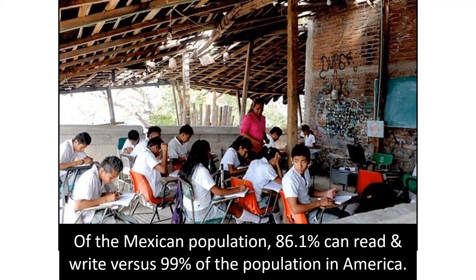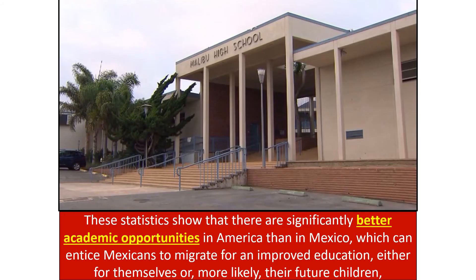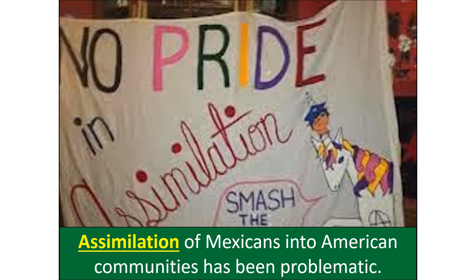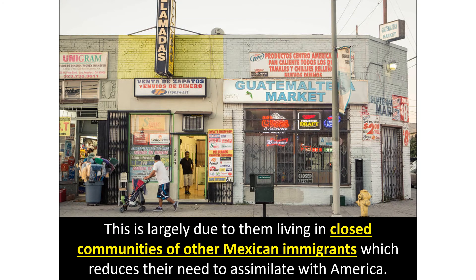In Mexico, 86.1% of people are literate versus 99% in the US, and most students in Mexico finish school at age 14 versus age 16 in the US. These statistics show significantly better academic opportunities in the US, enticing Mexicans to migrate for improved education for themselves or their children. Assimilation of Mexicans into American communities has been problematic — many can't speak fluent English, and studies show their English ability doesn't necessarily improve drastically, partly because they live in closed communities of other Mexican immigrants, which reduces the need to assimilate.